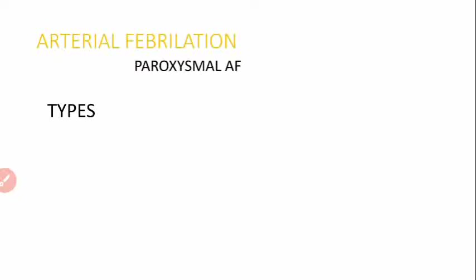The first type is paroxysmal atrial fibrillation, also called occasional atrial fibrillation. You may have symptoms that come and go, usually lasting for a few minutes to hours, and it resolves on its own or you may need medicine. The second type is persistent atrial fibrillation, which lasts longer than a week but less than one year, and you may need medicine or treatment to stop it.